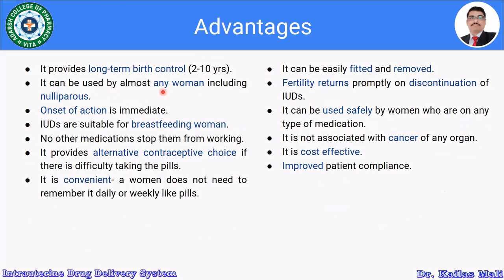IUDs can be used by almost any woman, including nulliparous women. The onset of action is immediate once placed. IUDs are suitable for breastfeeding women. No other medications stop them from working — other medicines will not interfere with the action of intrauterine devices. They also provide an alternative contraceptive choice if there is difficulty taking pills.